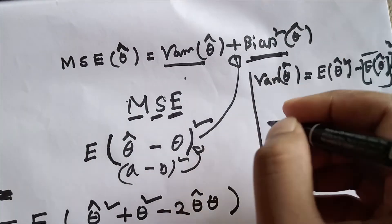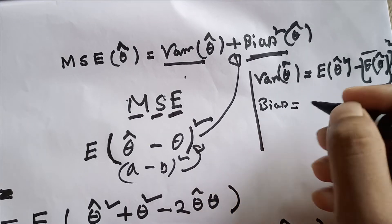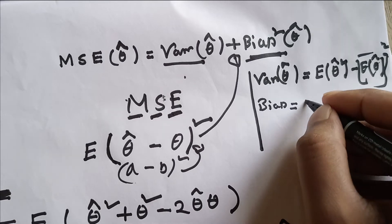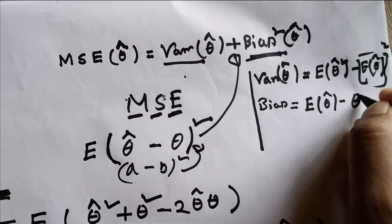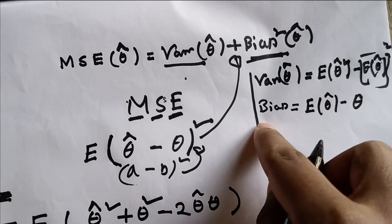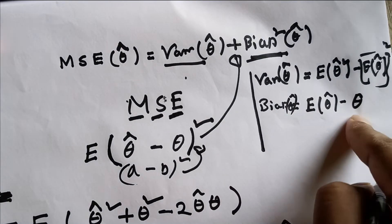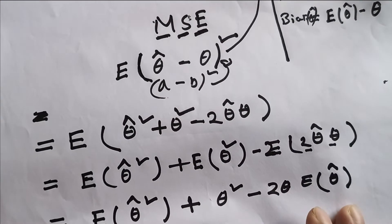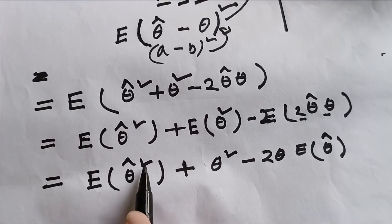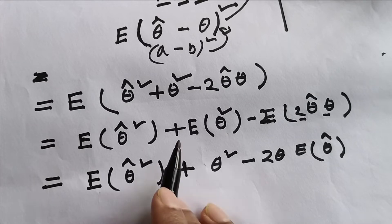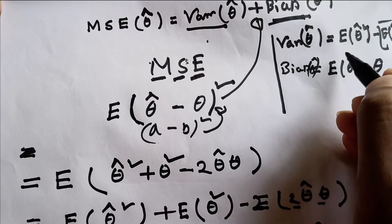The next thing is to define the bias. Bias of theta-hat is defined as: the expected value of theta-hat minus theta. Now if we look at our expression, we already have the term expected value of theta-hat squared, and we can find that in the variance formula.